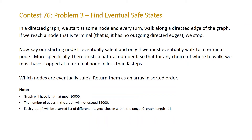The problem states: in a directed graph, we start at some node and every turn walk along a directed edge of the graph. If we reach a node that is terminal — that is, it has no outgoing directed edges — we stop. Our starting node is eventually safe if and only if we must eventually walk to a terminal node. The question asks which nodes are eventually safe.